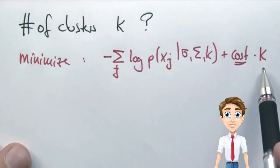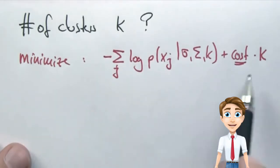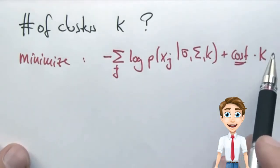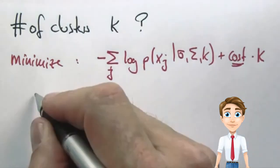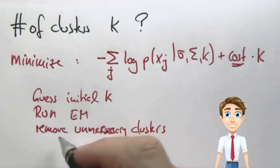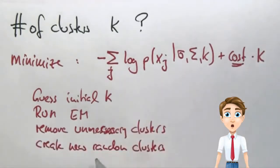If you increase the number of clusters, you would pay a penalty that is in the way of your attempted minimization. Typically, this expression balances out at a certain number of clusters and is generically the best explanation for your data. So the algorithm works as follows: guess an initial K, run EM, remove unnecessary clusters that will make the score over here go up, create some new random clusters, and go back and run EM.